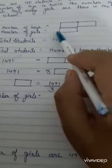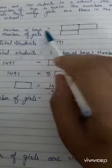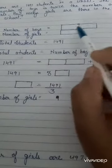If number of girls equals one box, then number of boys is just double of it, okay? Two times.